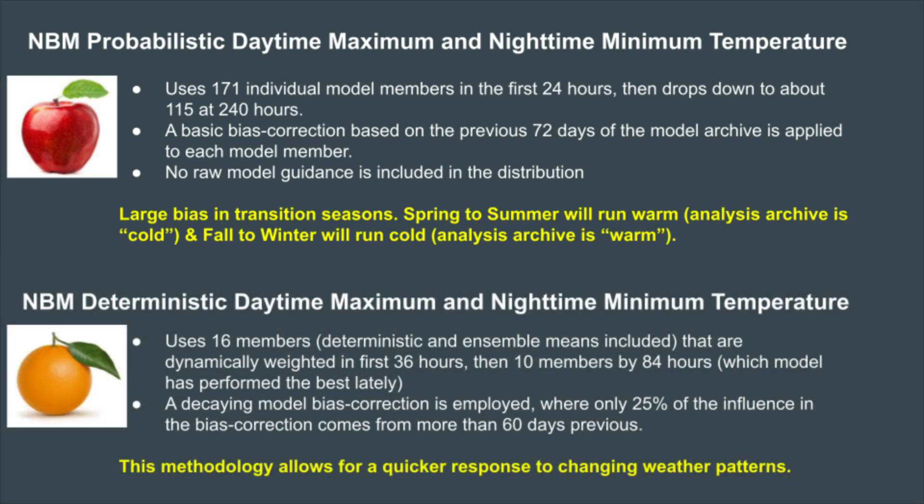Because of these differences, there will be a significant seasonal lag in the probabilistic temperatures, meaning it won't be able to catch up, so to speak, as fast as the deterministic values can.